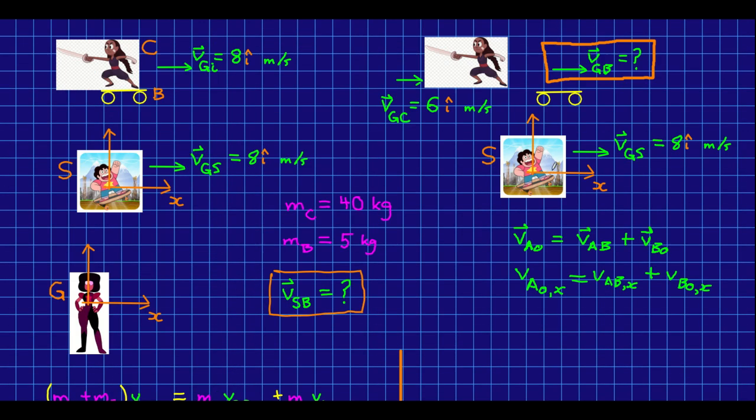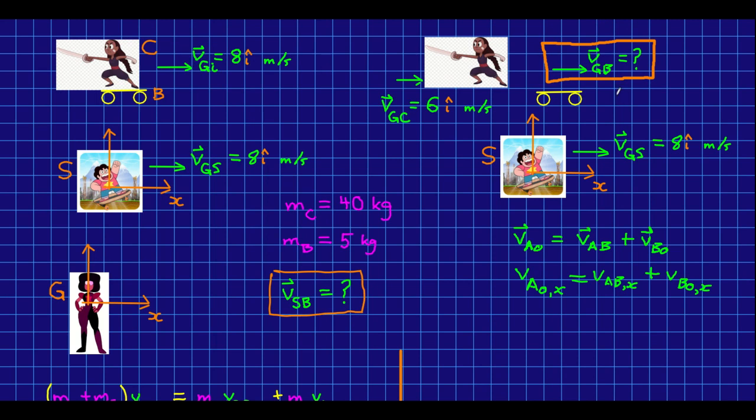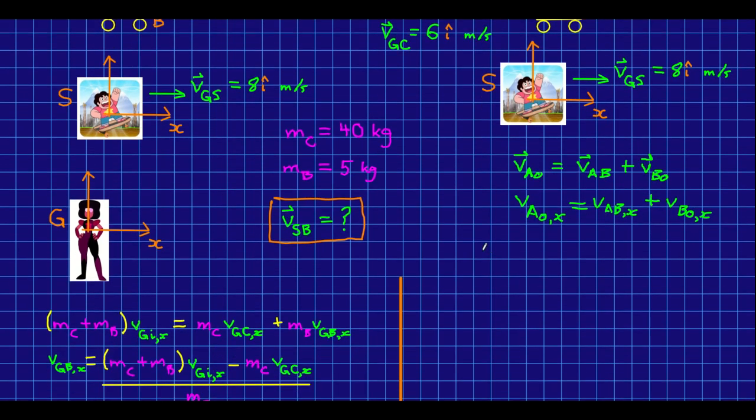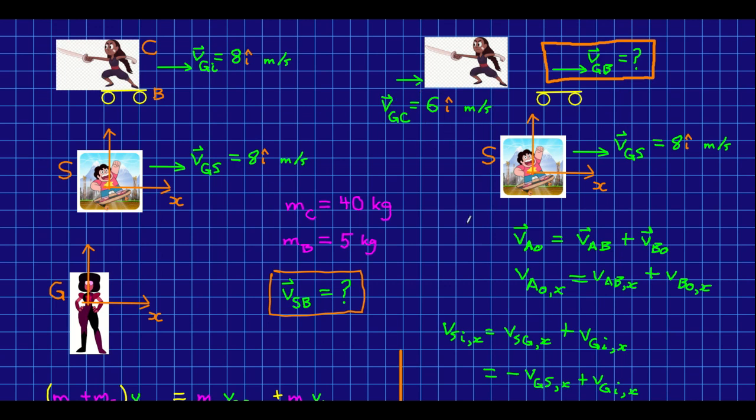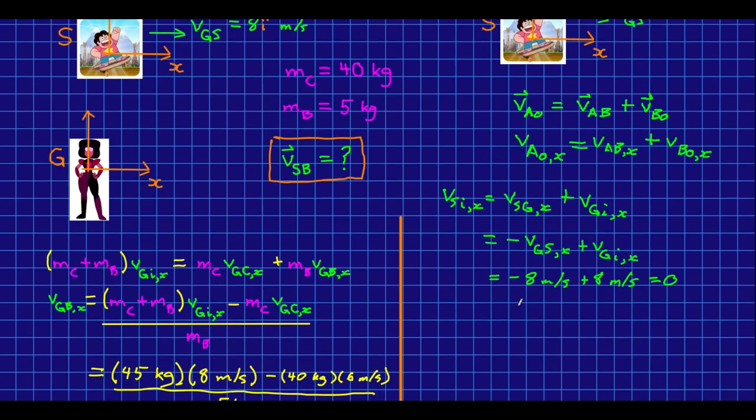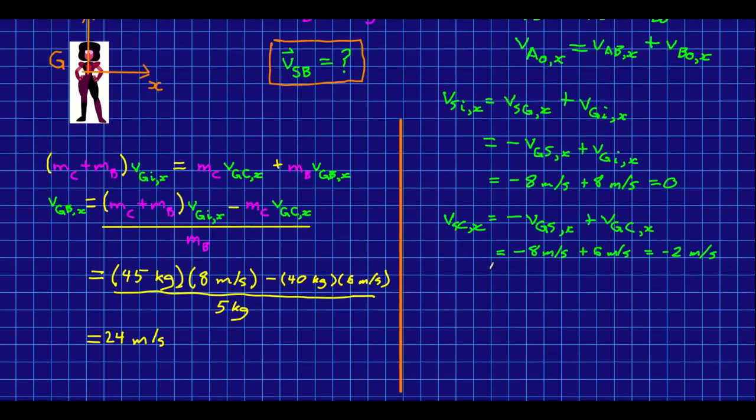Now let's redo this working in Steven's frame of reference. So the first thing we need to do is transform all these velocities into Steven's reference frame. Now you can probably see intuitively that initially the velocity of Connie and her board is zero in Steven's reference frame. But let's just see how that works out with the equation. So it comes out zero as expected. Similarly, we can see that Connie's velocity after she jumps off comes out as negative two meters per second.